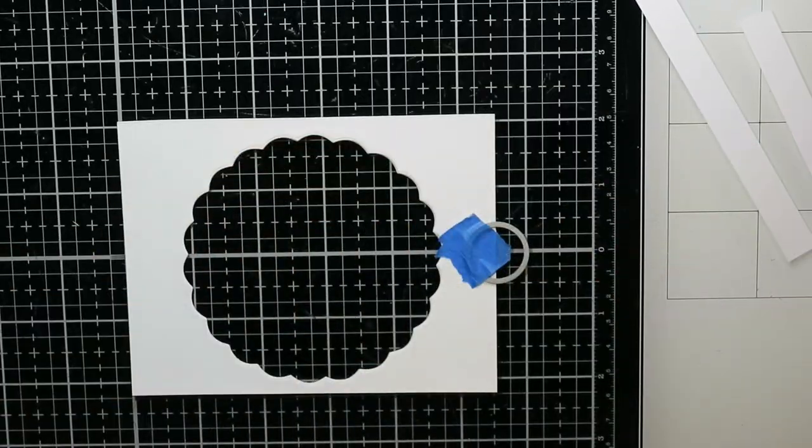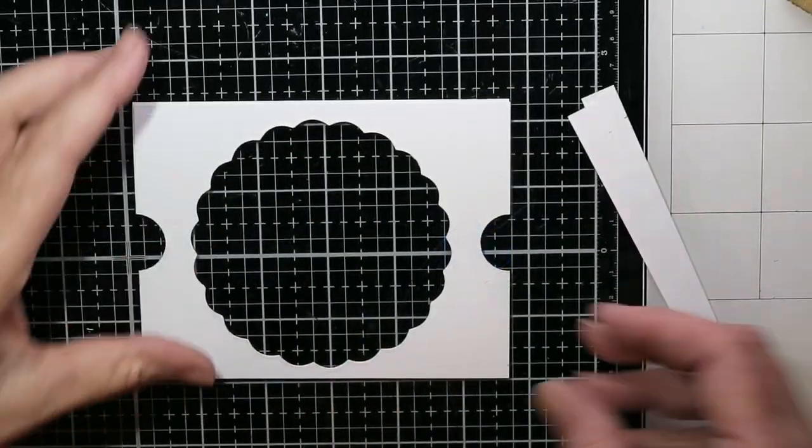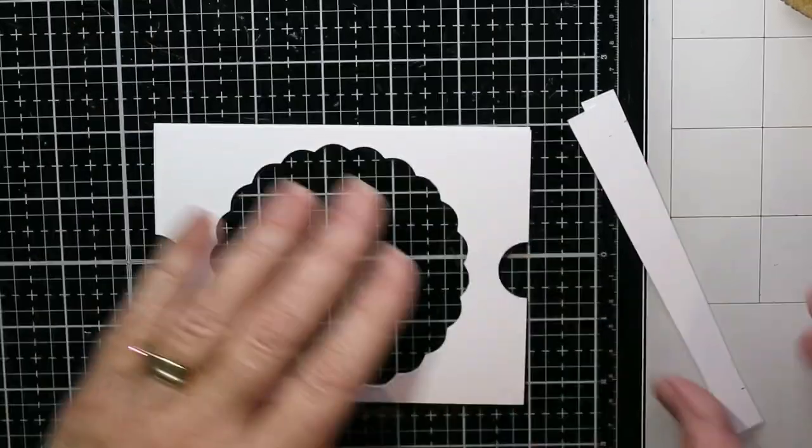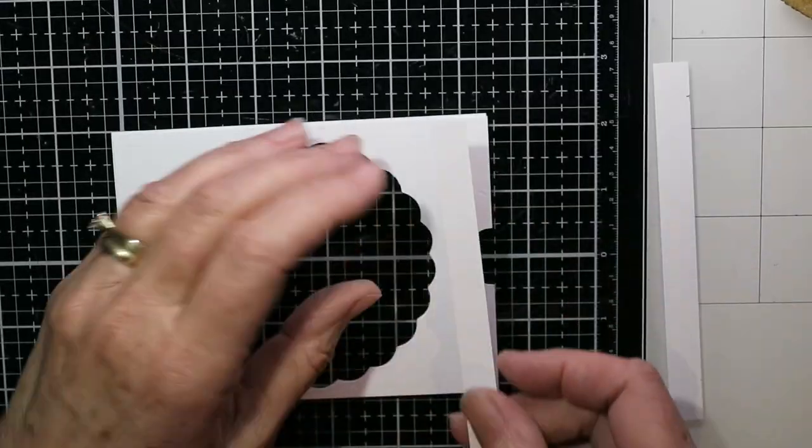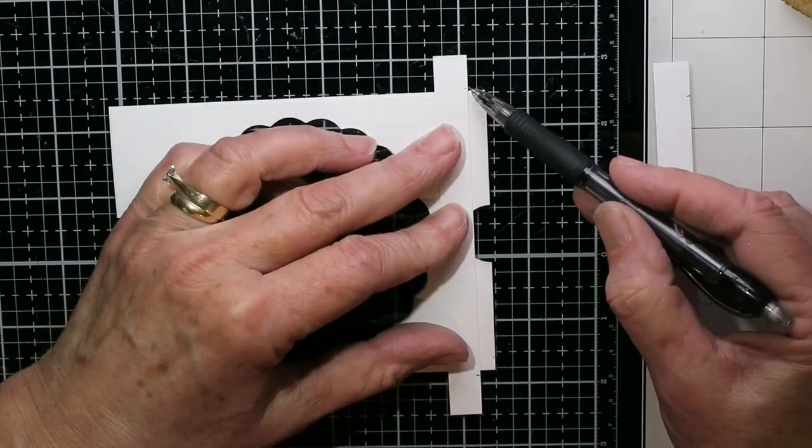And then I just used a small circle die to cut those thumb openings.